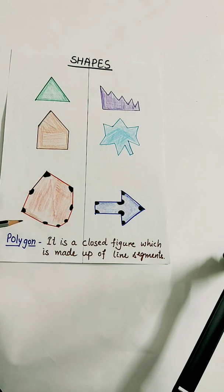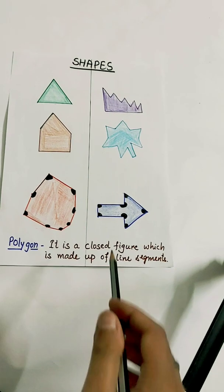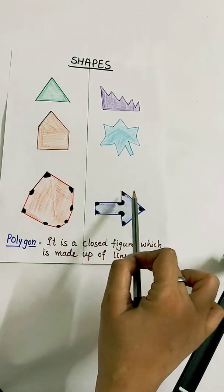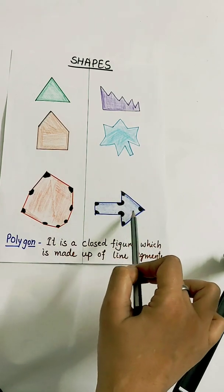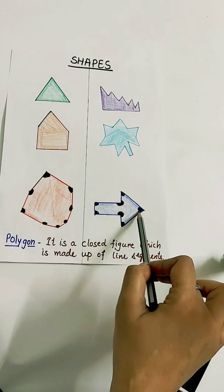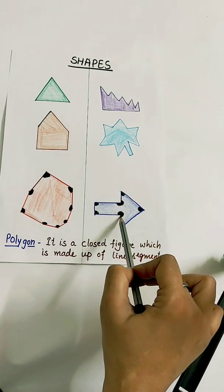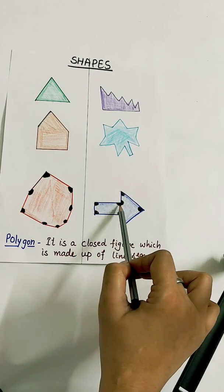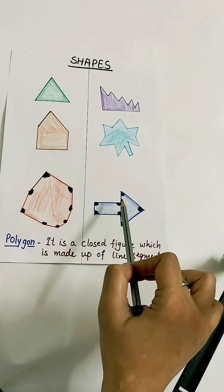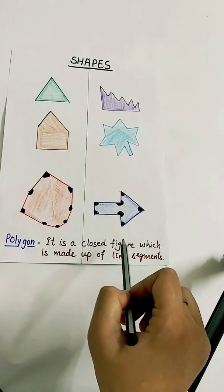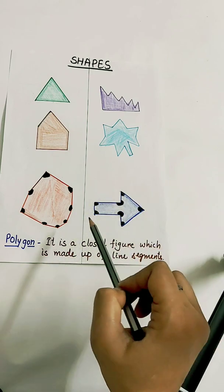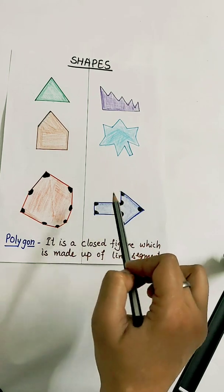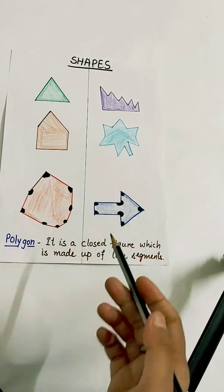So this polygon is a convex polygon. In this other polygon I have marked all 5 angles — these are less than 180 degrees. But the measure of these two angles is more than 180 degrees but less than 360 degrees. These are known as reflex angles. So if in a polygon at least one interior angle is reflex, that polygon is known as concave. Here there are two reflex angles, so this is a concave polygon.